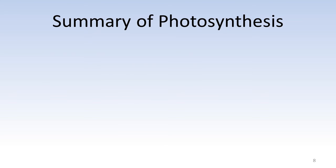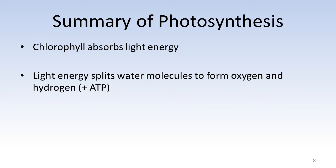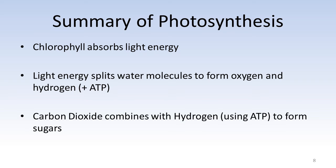So let us now summarize what happens during photosynthesis. At the beginning, chlorophyll will absorb the light energy. This energy will then cause water molecules to split into hydrogen and oxygen. The oxygen will be given off at this point. Some energy is also given off. In the final stage, carbon dioxide will combine with hydrogen to form sugars.